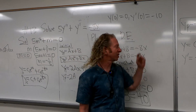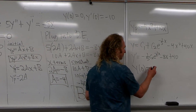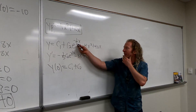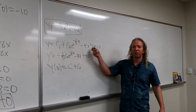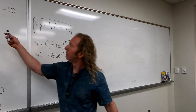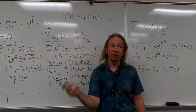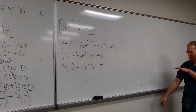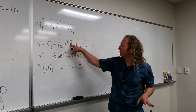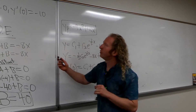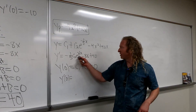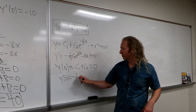Using Y of 0 equals 0: plugging in zero gives C1 plus C2 plus 0 equals 0. For Y prime of 0 equals negative 10: plugging in zero, the 8x term vanishes, E to the zero is 1, so we get negative 1/5 C2 plus 40 equals negative 10.